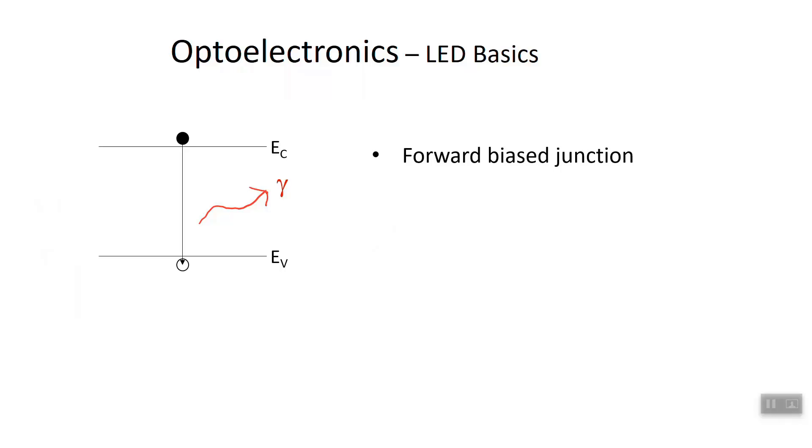This happens best when you have a forward biased junction. We're going to go over that a little bit. The process is referred to as injection luminescence, and it happens fairly quickly over a time of about 10^-6 seconds. That's the recombination time.